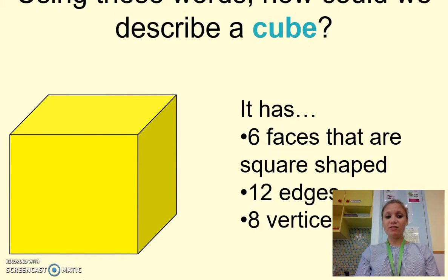So, when we're describing a cube, we would say it has six faces that are square shapes, it has four straight edges and eight vertices. So, eight corners.